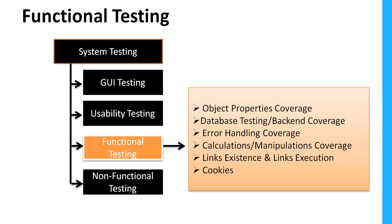Functional testing is very important. As part of functional testing we need to test a lot of things. I have listed out a few things here. One of them is object properties coverage — as part of functional testing we need to verify our application according to customer requirements.